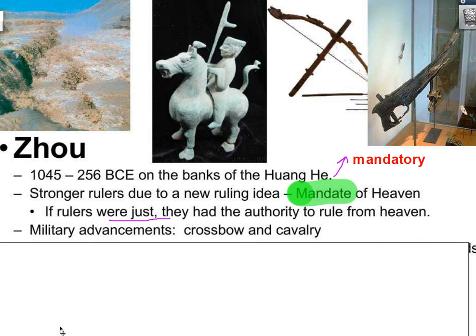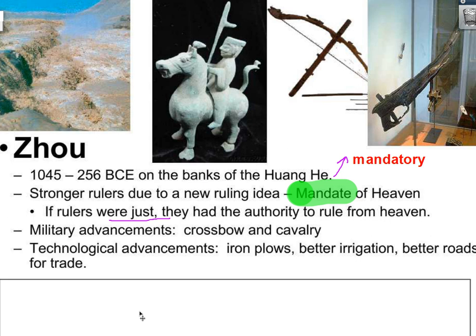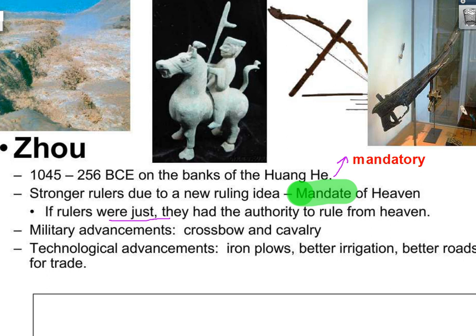The Zhou dynasty also saw several military advancements, including the crossbow and heavy cavalry, and many technological advancements as well — iron plows, better irrigation, better trade. That's just a quick, brief introduction to these two dynasties. We're going to discuss them more in class and take a look at some documents on them and at philosophies that developed there as well. Thanks for listening.